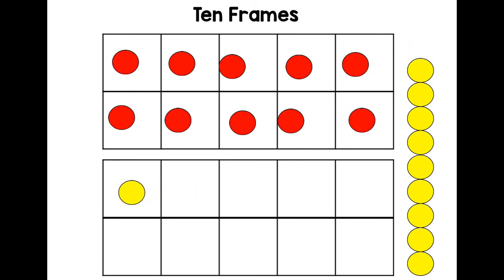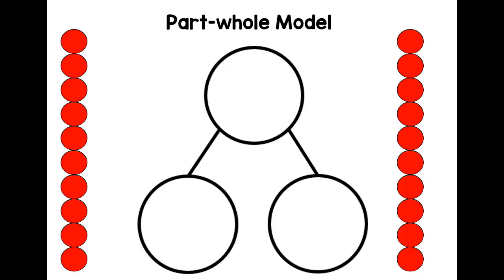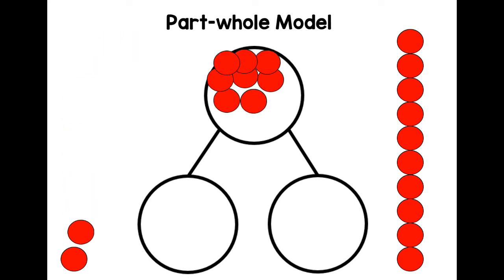This is the part-whole model. Let's put eleven into the top circle—that's the whole. Wow, that was quick. That's eleven.